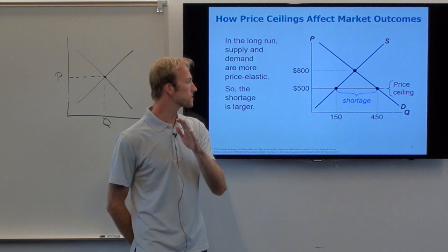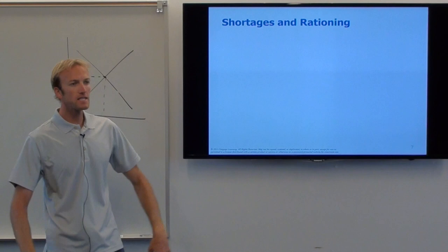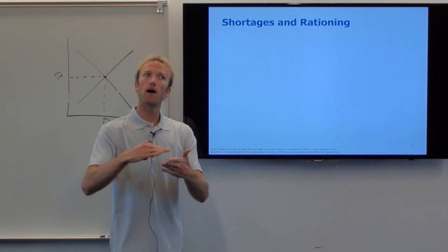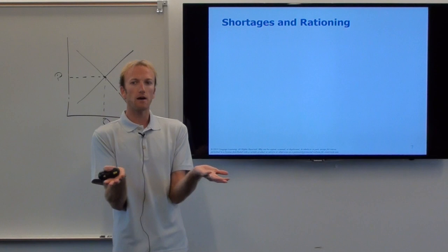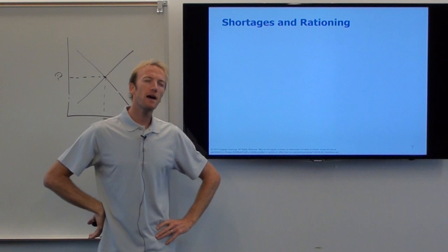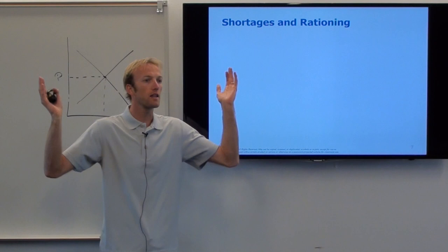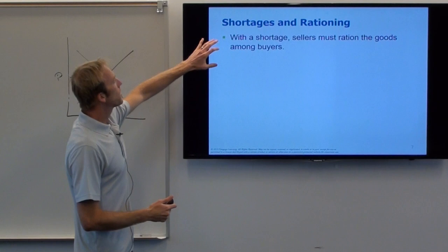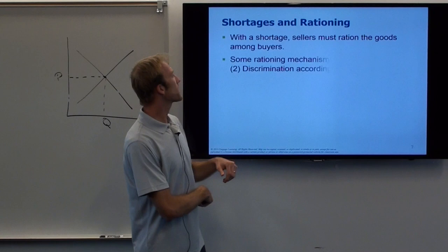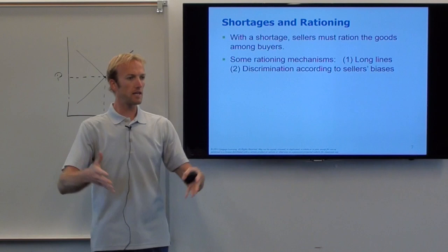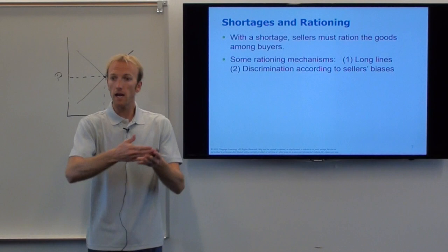So the main outcome when the government institutes a binding price ceiling is a shortage. And the main outcome when the government institutes a non-binding price ceiling? Nothing — no change. With a shortage, sellers must ration the goods among buyers. If there are more people who want it than you have available, there has to be some mechanism to distribute — not everybody can get it. A simple rationing mechanism might be: the first 20 people in line get the apartment.